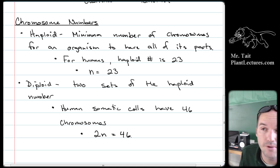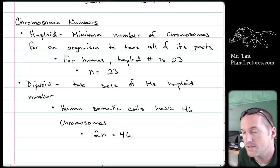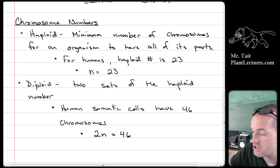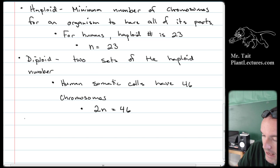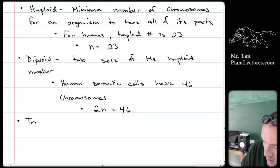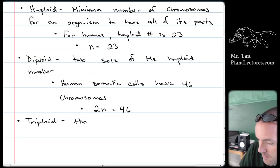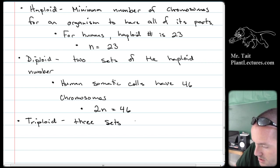Most organisms are diploid or haploid. But there are strange instances — like the banana. Bananas are triploid, meaning they have three sets of chromosomes, written as 3N.